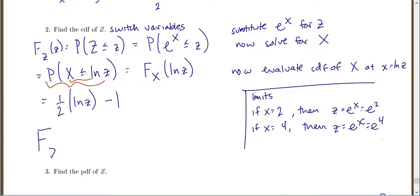So our final answer for the CDF of z is that it's going to be 1/2 natural log of z minus 1 for z between e to the 2 and e to the 4.